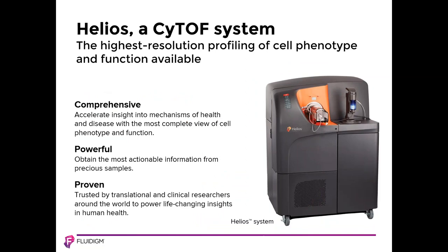By enabling routine analysis of greater than 50 parameters per cell, Helios offers the most complete and comprehensive view of cell phenotype and function in a cytometric platform available today. The power of this technology allows you to collect the most actionable information from every cell in every precious sample. In addition, this technology is now available at over 200 sites worldwide and is a key technology in multiple clinical trials. More information on this later in the talk.